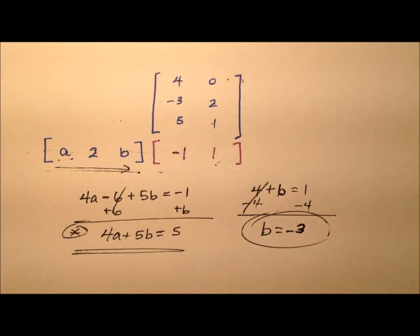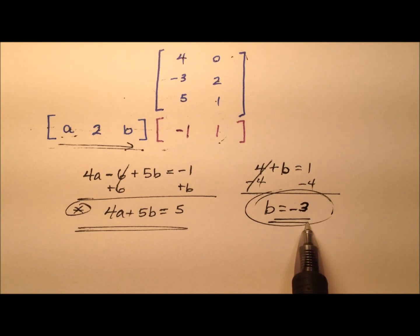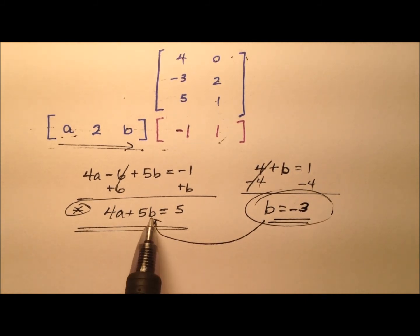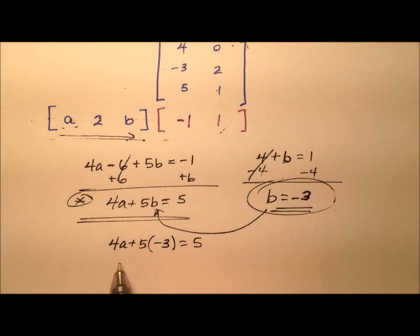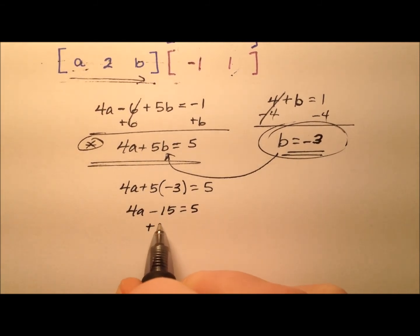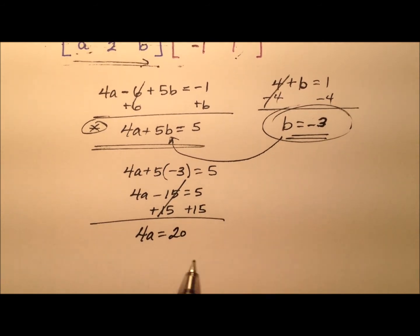Okay, easy peasy, not too bad at all. So if B is negative three, let's just go ahead and plug that negative three value into this other equation. So 4A plus five times B, and B was negative three, and that's going to equal five. So 4A minus 15 equals five. We have a nice two-step equation. Let's start by adding 15 to both sides to start to isolate that A. So it looks like 4A equals 20. So a quick division by four will leave me with A equals five.